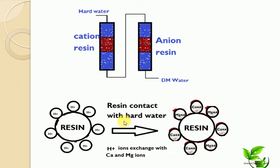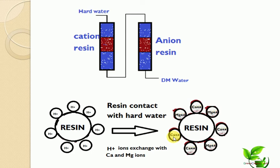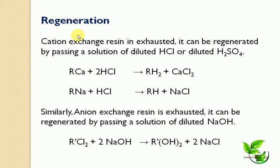The cationic resin exchanges H⁺ ions with Ca²⁺ or Mg²⁺ ions. Once all H⁺ ions have been exchanged, no free functional groups remain, and the microporous structure becomes blocked. At this point, the resin is exhausted and can no longer remove hardness-producing ions from large quantities of water. Regeneration is then required.